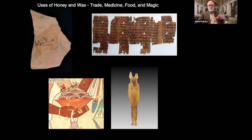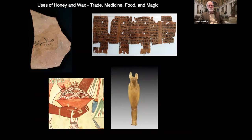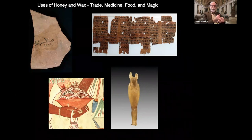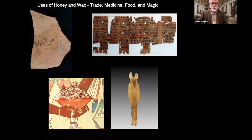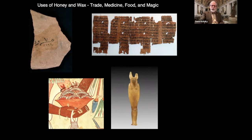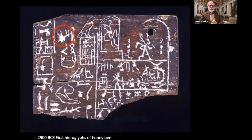Another use of honey was as barter. The ancient Egyptians had no coinage — if you worked in ancient Egypt, you'd be paid with a commodity like wheat, linen, honey, or beer, with a standard value so you could then trade with others. Their interest in bees goes back very early. From around 2900 BCE, one of the oldest hieroglyphs for the honeybee is on display at the British Museum in London.